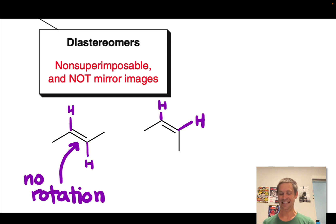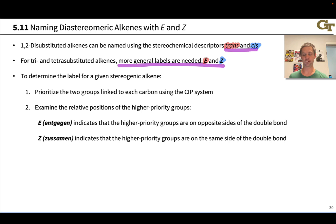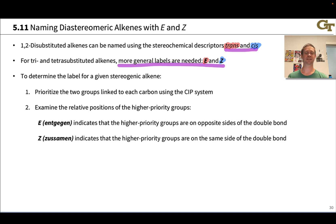The convention that we use here is called the E-Z convention. Just like we use the letters R and S with tetrahedral carbon, we use E and Z with alkenes. These are exactly analogous to, and really generalized versions of, trans and cis respectively — E analogous to trans, and Z analogous to cis.